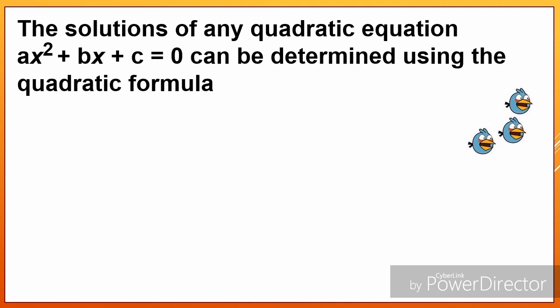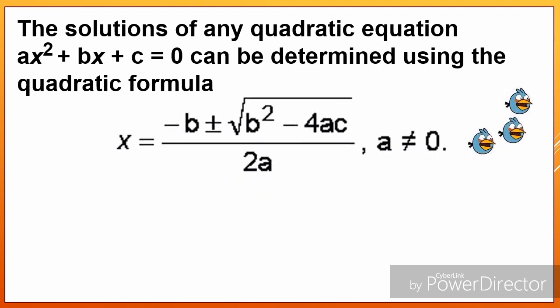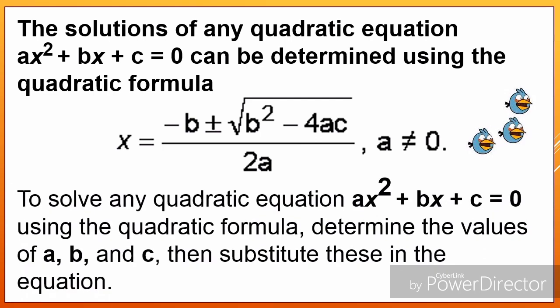The solutions of any quadratic equation Ax squared plus Bx plus C equals 0 can be determined using the quadratic formula: x equals negative B plus or minus the square root of B squared minus 4AC, all over 2A, where A must not be equal to 0. To solve any quadratic equation, we determine the values of A, B, and C, and then substitute these in the equation.